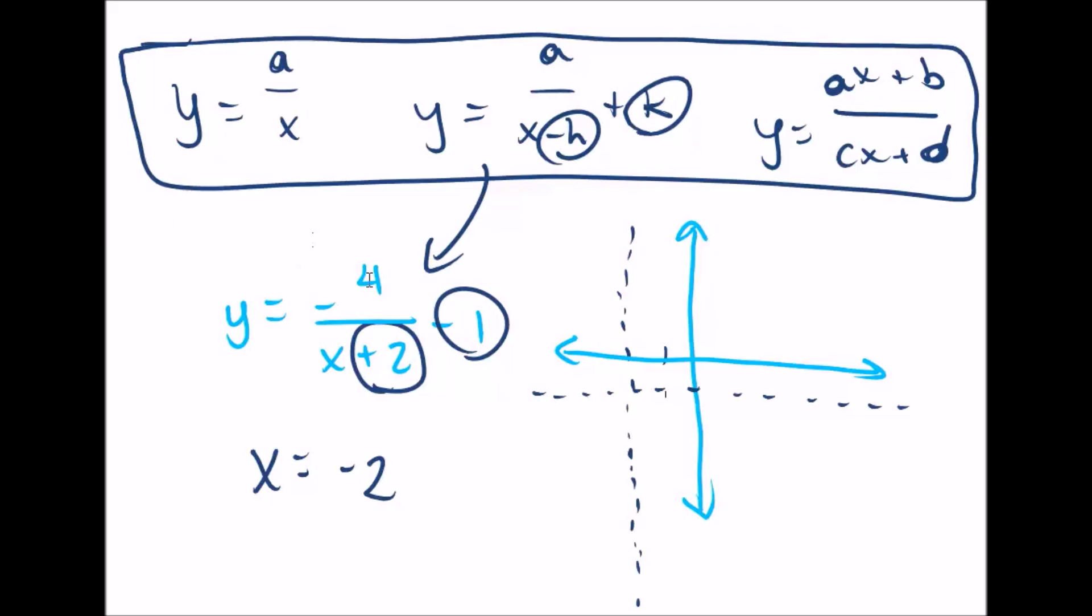Now this one's negative four, and that's the a. Because of that negative sign for the a, we know it's going to be flipped. So we're used to seeing something down here and up here. That's the most basic form.